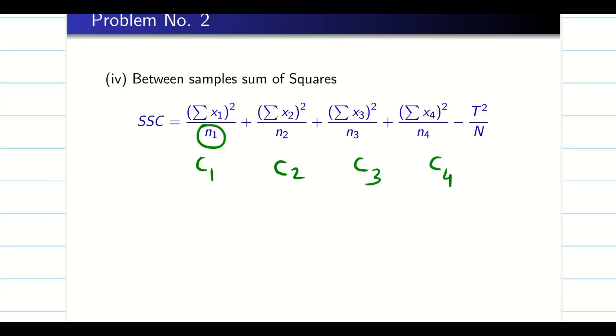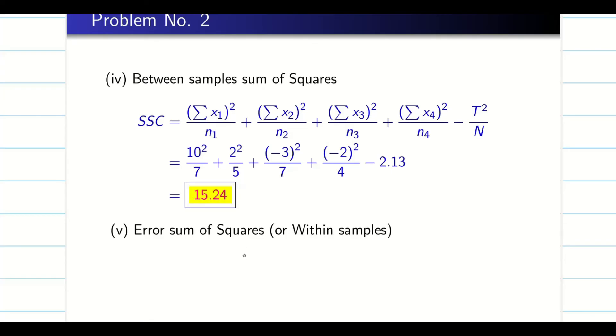So it's going to be 7571. Now we can find the value. And finally, the error is going to be SSE, that is my SST minus SSC. That's it. So now I have everything.